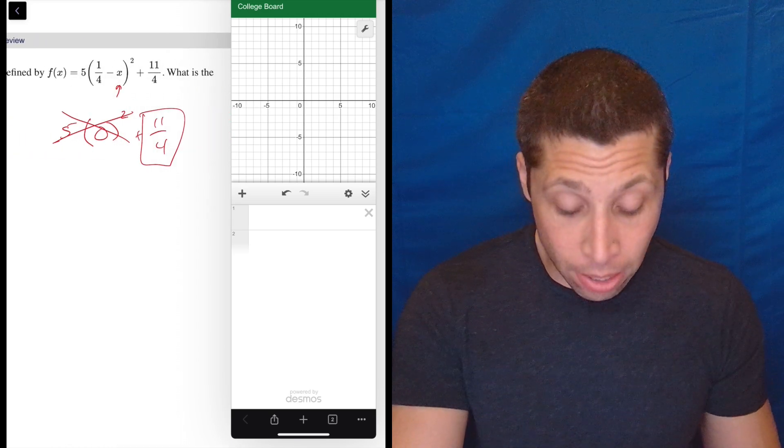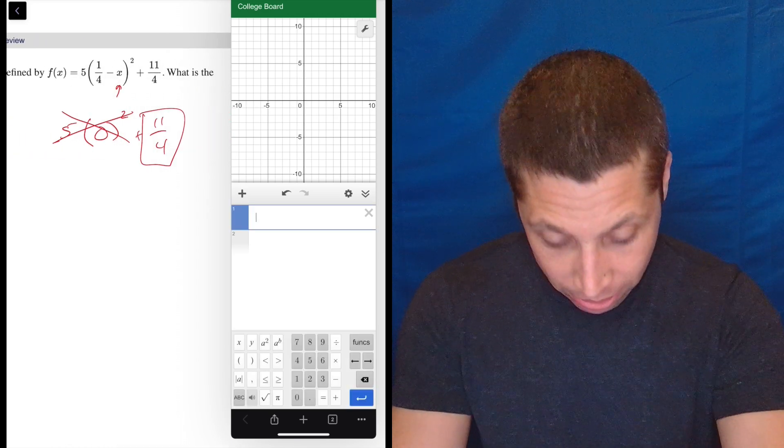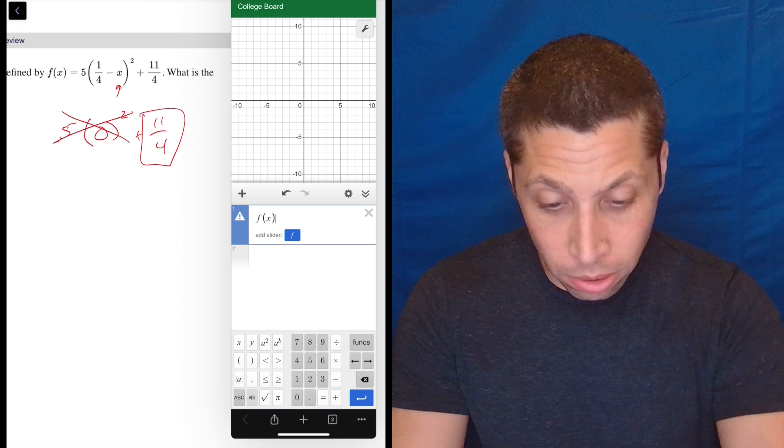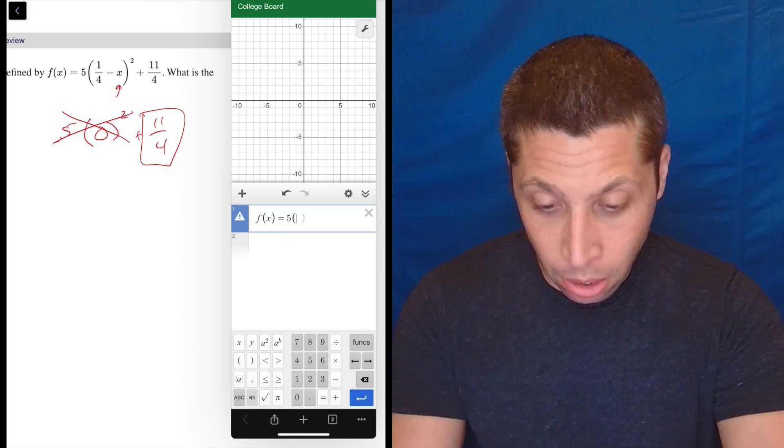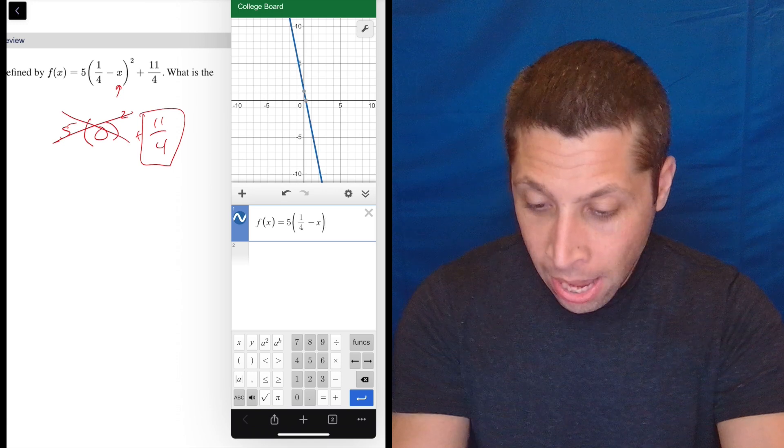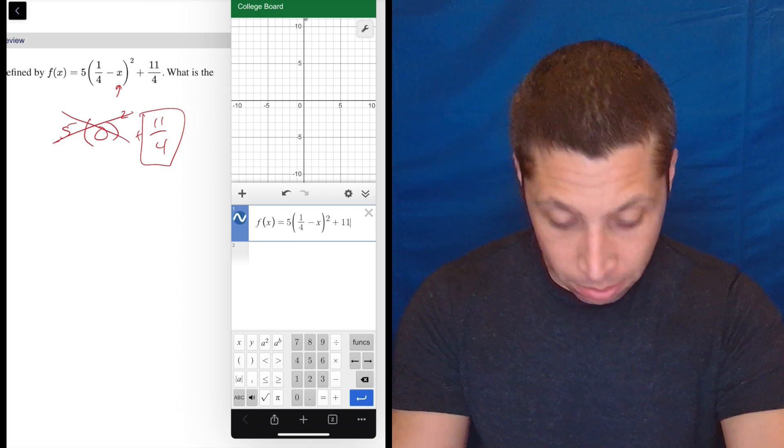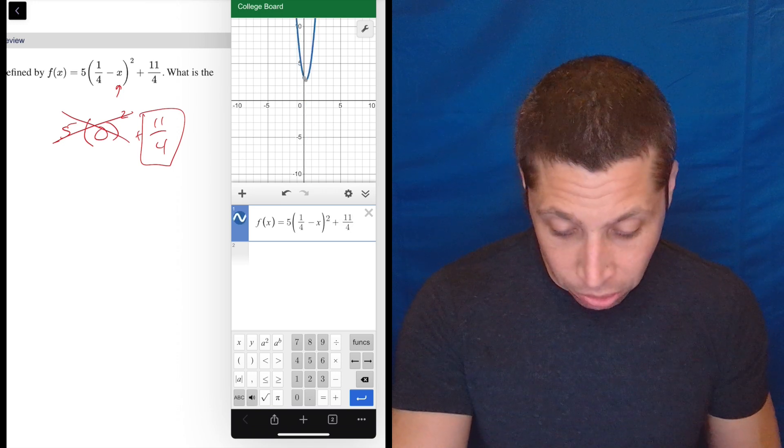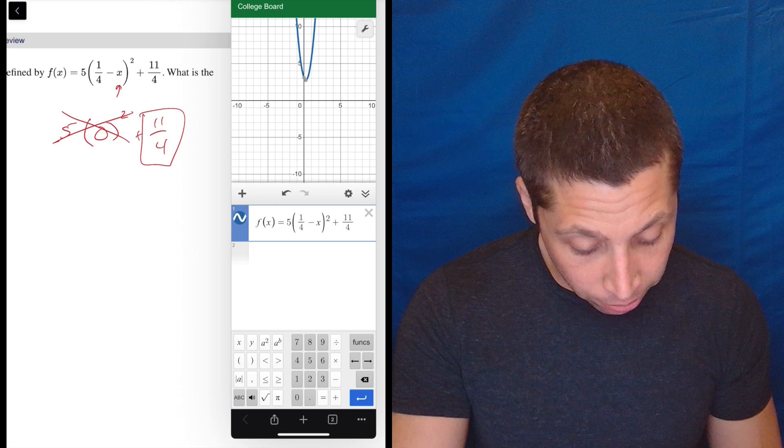I recommend that you do it with the f of x. So if we type f(x) = 5(1/4 - x)² + 11/4 — don't forget the squared, people always do — that's our equation. Double-check it, and looks good.